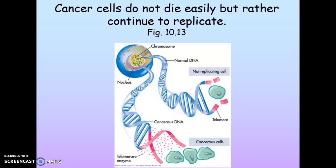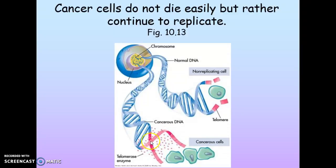However, some mutations in cancerous cells continue to add length to the telomeres through an enzyme called telomerase, and the cell continues to replicate. The mutations within the DNA that have accumulated cause the cell to become cancerous. It's not signaled to die because the telomeres are still very long, and then that cell can become cancerous.